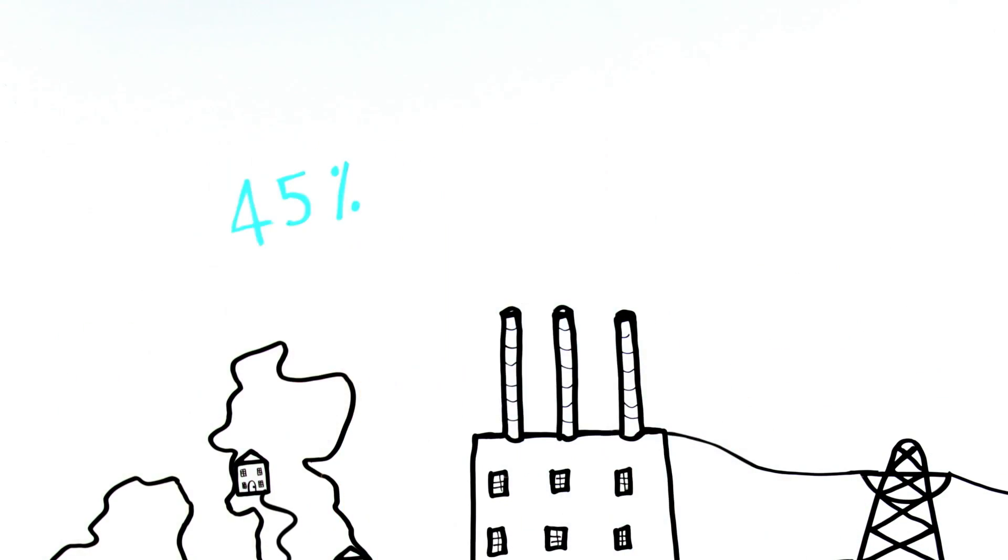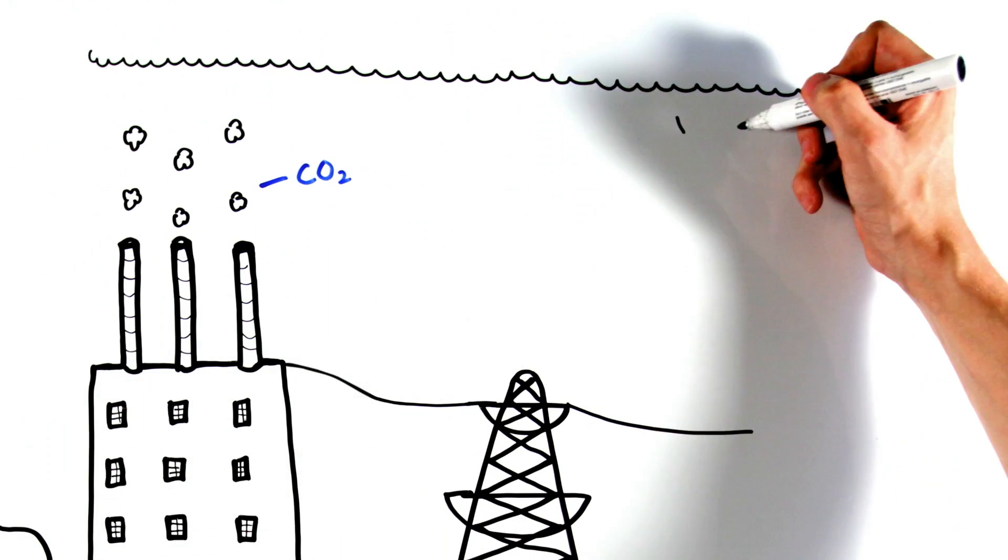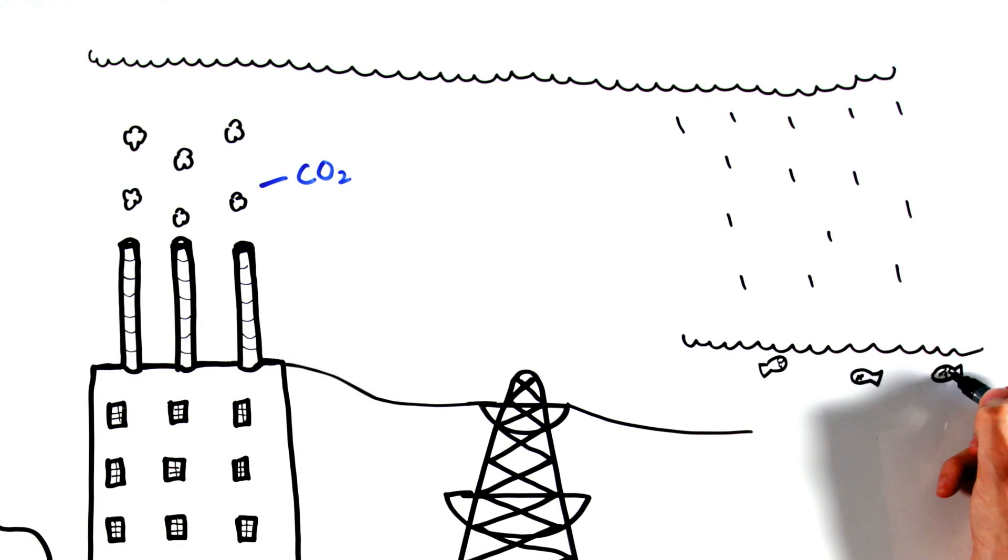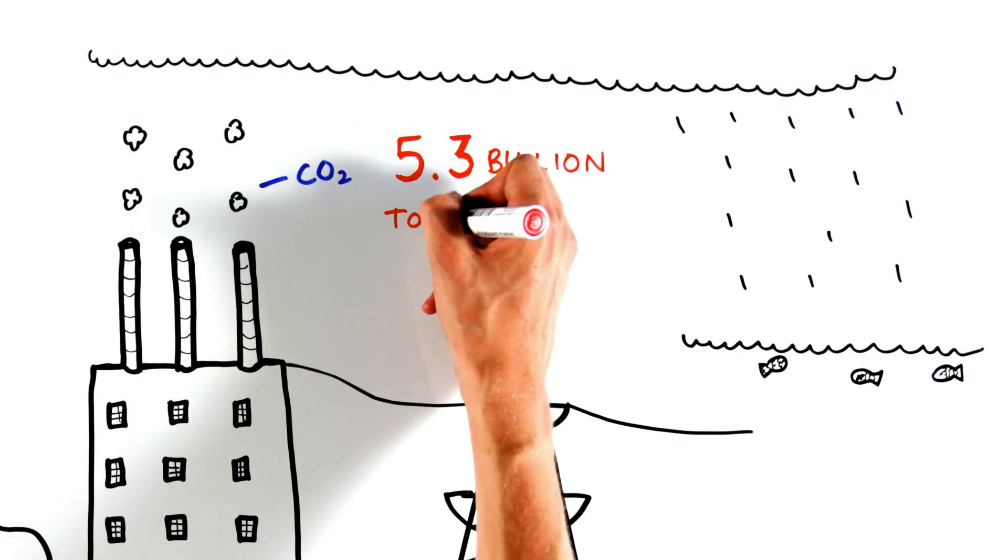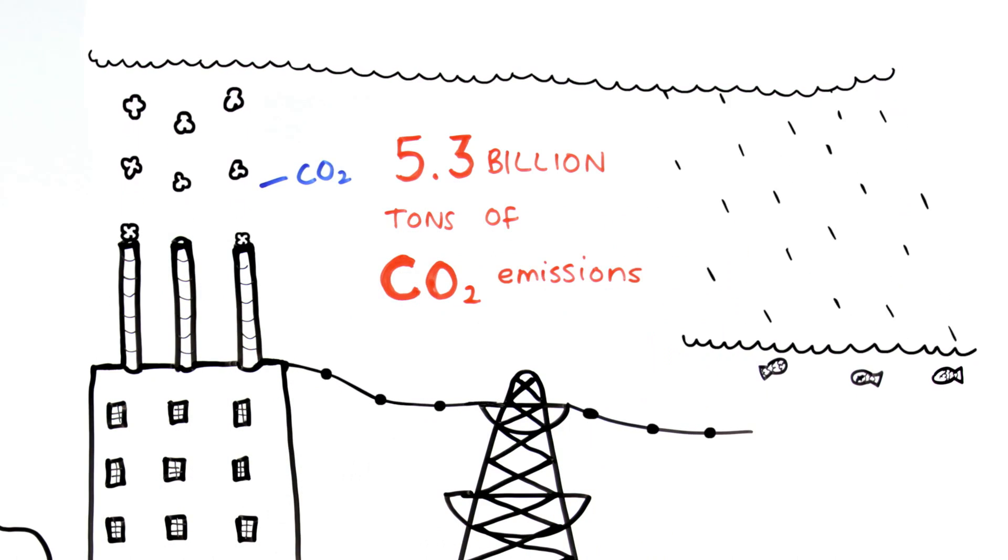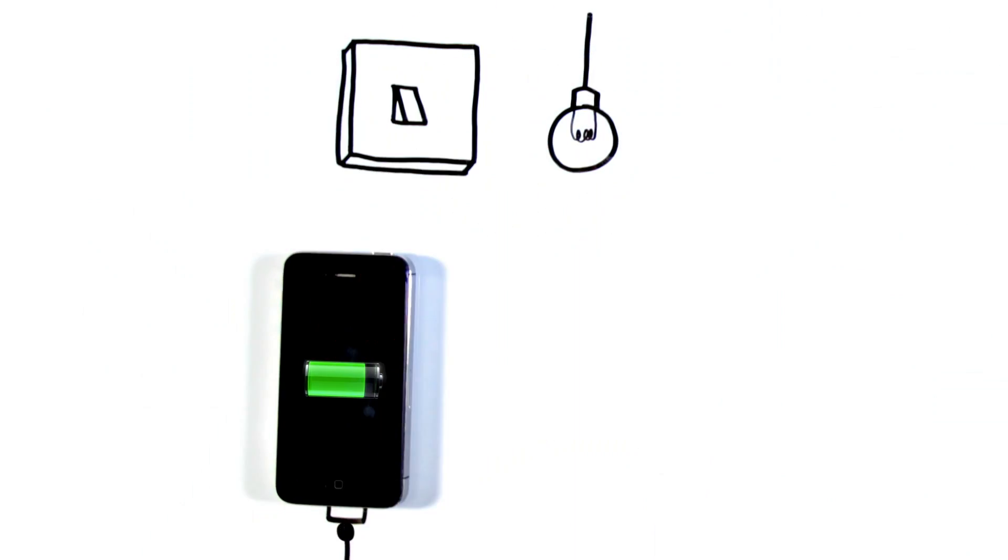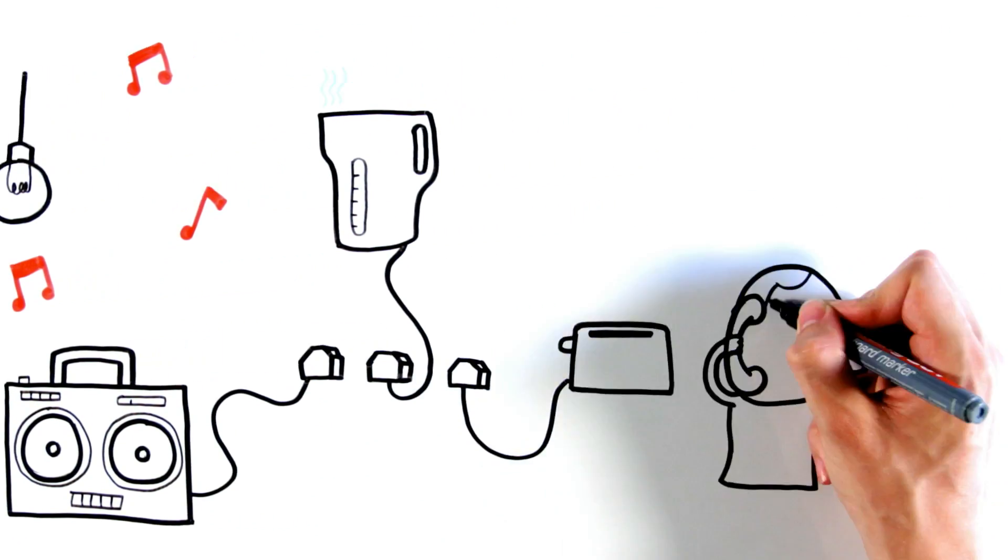While gas produces up to 45% less CO2 than coal, it still accounts for a whopping 5.3 billion tonnes a year of CO2 emissions. OK, let's now revisit our trusty mobile, still plugged in of course. But that's not the only thing in this house that needs power.